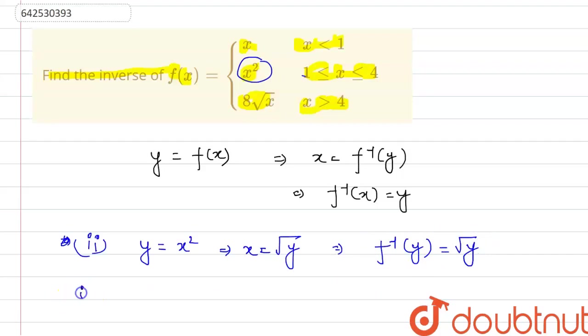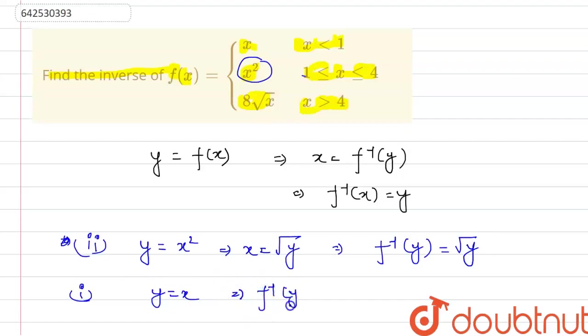For our first case, it is y equals x. Thus, we directly have x in terms of y, so we write down f inverse of y as equal to y.